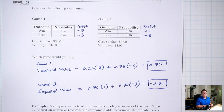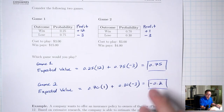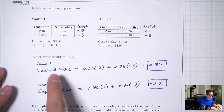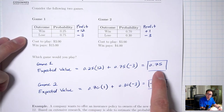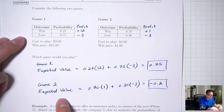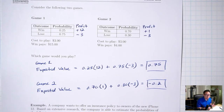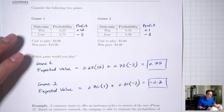The expected value of game one is 0.75 and the expected value of game two is negative 0.2. You probably want the game with the higher expected value, so game one. And it's true.